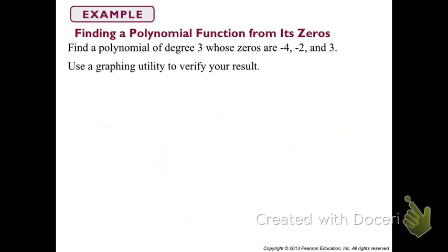We're going to find a polynomial function from its zeros. We're going to build a polynomial function of degree three, and the zeros are negative four, negative two, and three. Based on the prior slide, we know that a zero of negative four means that x minus negative four is a factor of the function. x minus negative two is another factor, and x minus three is another factor. So we have three factors of this function, along with this coefficient a out here.